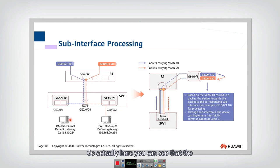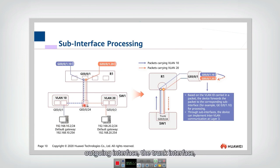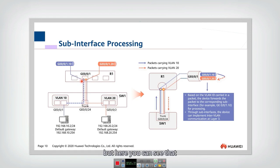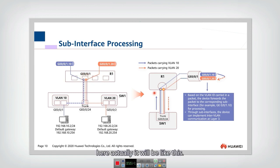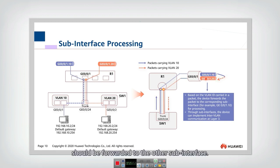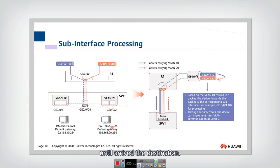Packets are transmitted from VLAN 10 in the switch to the trunk outgoing interface, then forwarded to the subinterface of the router. The packet entering the switch has no tag, but gets a tag when going out through VLAN 10. When going into the trunk, it still carries the tag. Within the router, although there is one physical interface, it includes two subinterfaces. A packet arriving at one subinterface is forwarded to the other subinterface, and through that subinterface the packet is forwarded in router 1 until it reaches the destination.